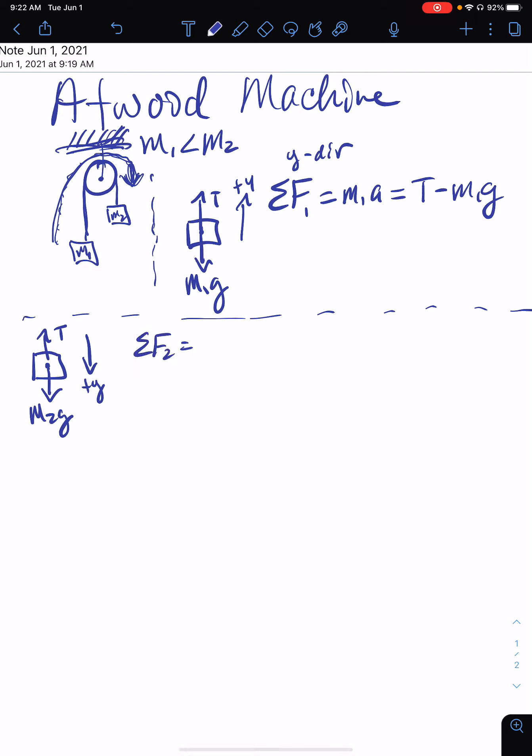So back to Newton's second law number two: this one's m2a—again, same acceleration—but now down is positive because that's the way the system is accelerating. So that'll be m2g minus tension.